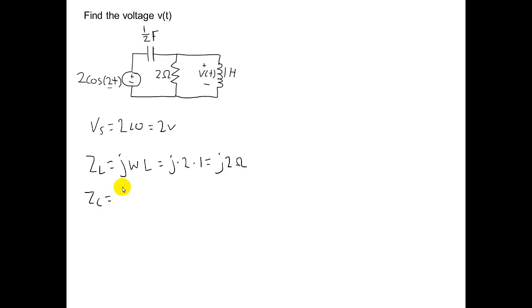The impedance of the capacitor can be found using the equation Z equals 1 over J omega C. Again, its frequency is 2. The capacitance is 1 half farad. This gives us an impedance of 1 over J ohms. I prefer to write that as minus J ohms. I got that by multiplying the top and bottom of this expression by J.